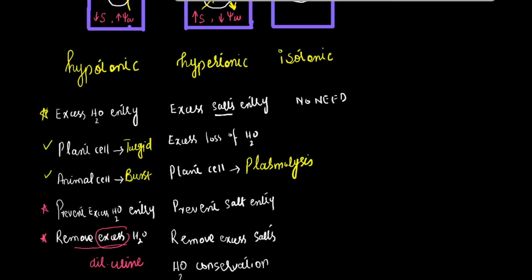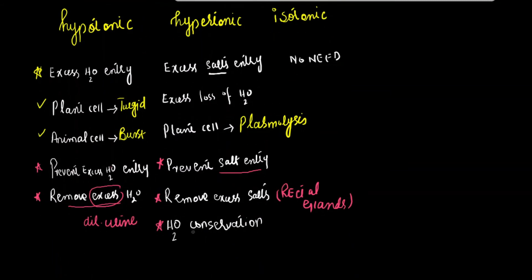Now, if we manage this condition in this environment, organisms will do three things. They will prevent the entry of solutes into the body. Second, they will remove excess salts from the body with the help of kidneys or with the help of glands called rectal glands. Third, they will try to conserve water, maintaining maximum amount of water in the body.